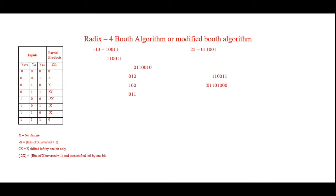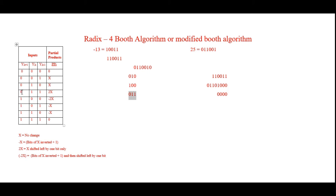Before going to the next stage I leave four spaces of zeros. For the last group, 011, I look up the table and it says to perform 2x — shift x left by one bit. This is my x and I shift it left by one bit. After inserting four zeros for spacing, I write x shifted left by one bit, giving 100110.